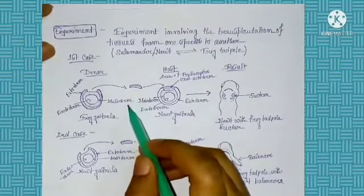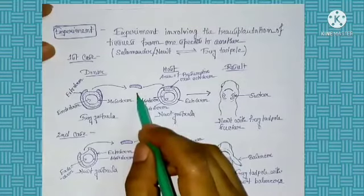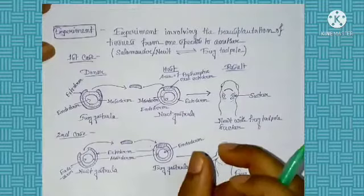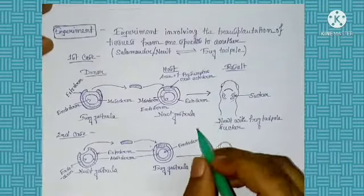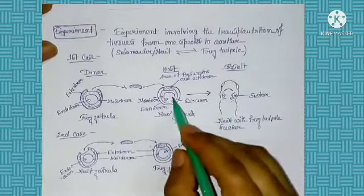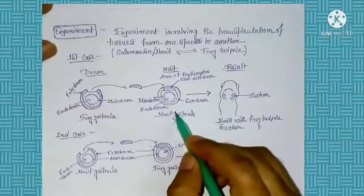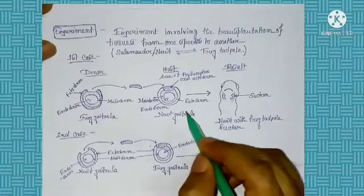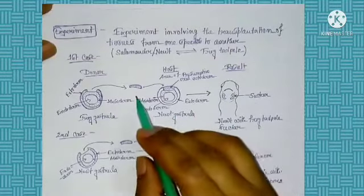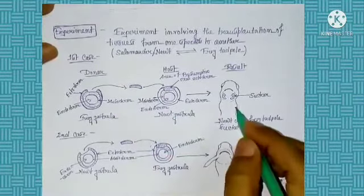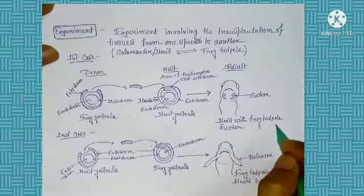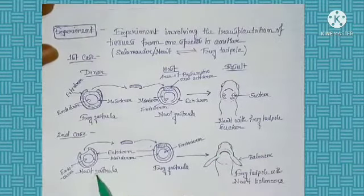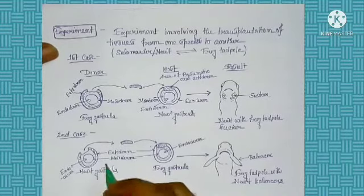After the proper transplantation, this gastrula forms a newt and a sucker is formed in the mouth portion of the newt. As this transplanted frog ectodermal portion is responsible for forming the frog mouth portion, after transplantation into the ectodermal region of the newt gastrula, the transplanted ectoderm forms the mouth portion of the frog. So a newt with a frog-type sucker is formed.